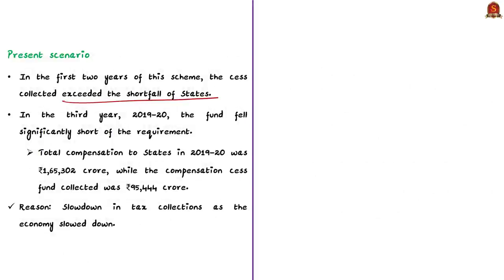But in the third year, that is financial year 2019-20, the fund fell significantly short of the requirement. Total compensation payable to states in 2019-20 was around 1,65,000 crores while compensation cess collected was just 95,000 crores. This means a shortfall of around 70,000 crores, and the central government paid this from the collections of previous years, 2017-18 and 2018-19.